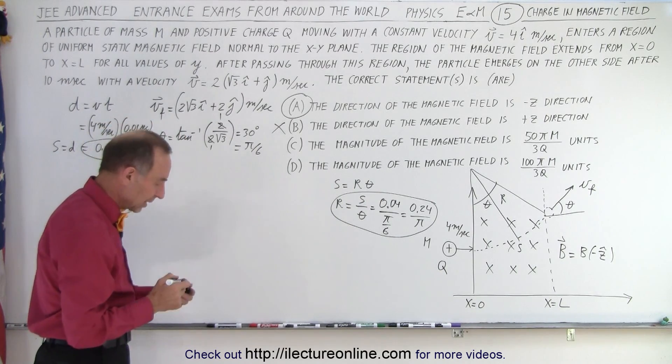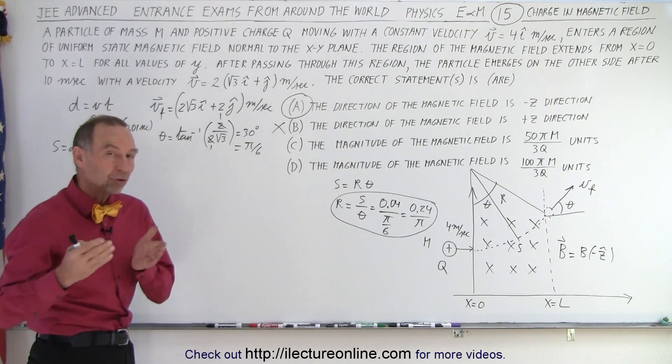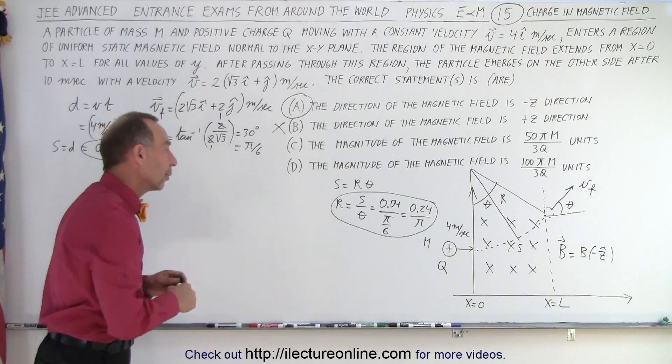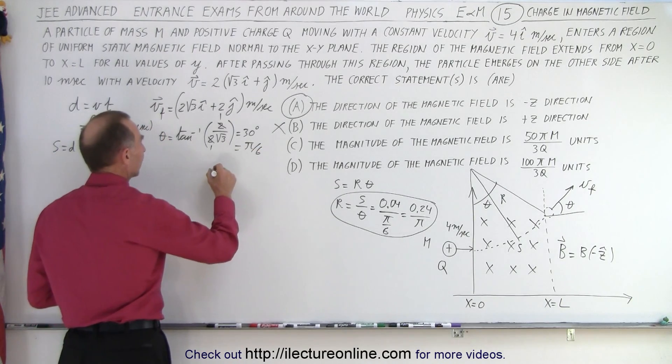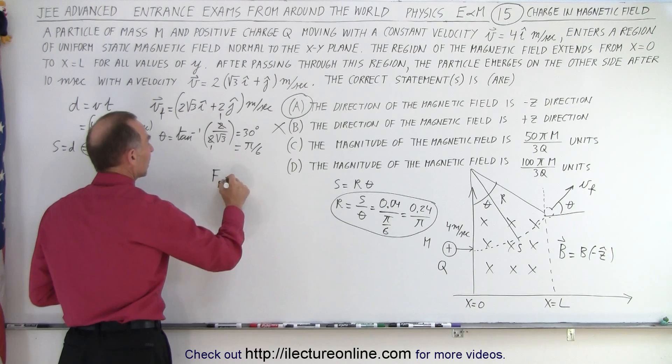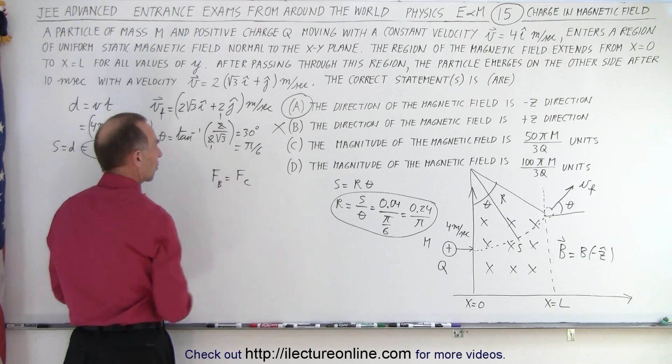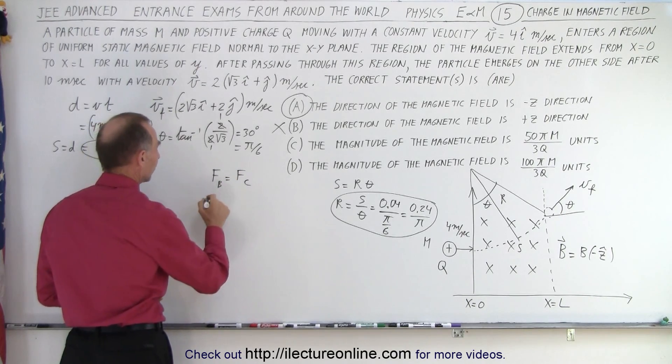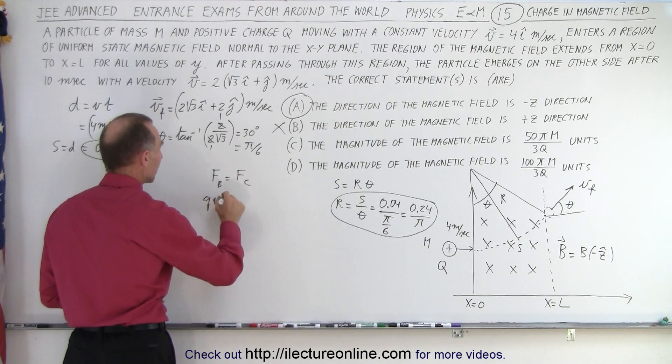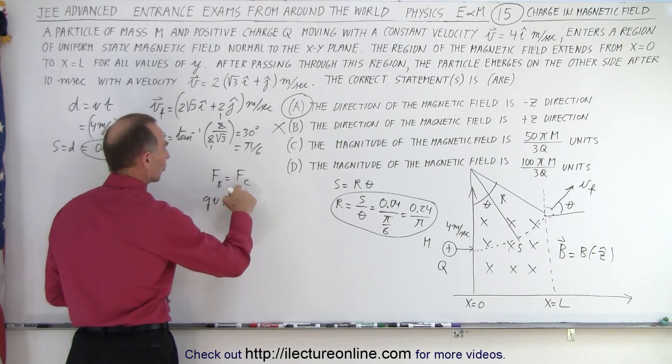Now we're getting close because the next thing we're going to do is say that the fact that the particle moves through the magnetic field, it experiences a force due to the magnetic field. Of course that force is used for the centripetal force to make it go into a circle. So we can say that the force due to the magnetic field must equal the centripetal force.